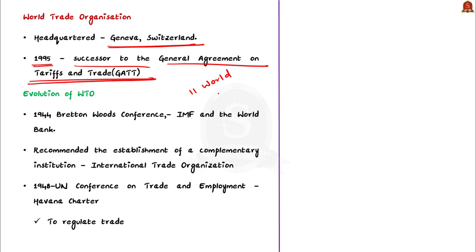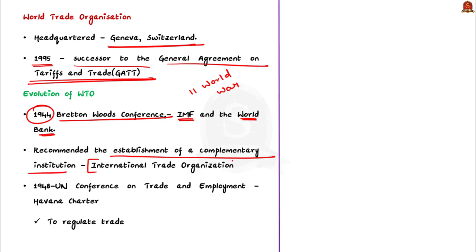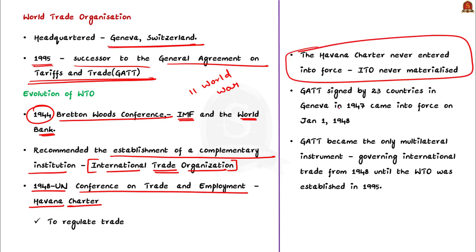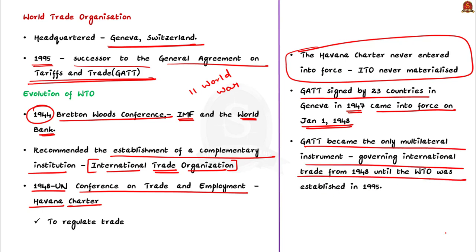GATT traces its origin to the 1944 Bretton Woods Conference, which also laid the foundation for the IMF and the World Bank. The conference delegates recommended the establishment of an International Trade Organization, and in Havana in 1948 the UN Conference on Trade and Employment concluded a draft charter for the ITO — famously called the Havana Charter — but this never came into existence. Meanwhile, GATT was signed by 23 countries in Geneva in 1947 and came into force on January 1st, 1948, with the purpose of phasing out import quotas and reducing tariffs on merchandise trade. GATT became the only multilateral instrument governing international trade from 1948 until WTO was established in 1995.